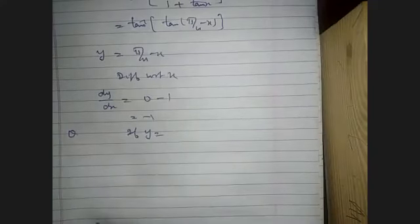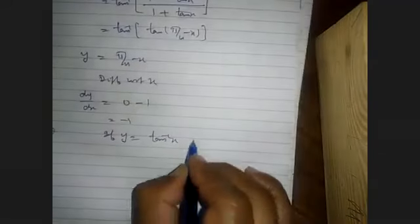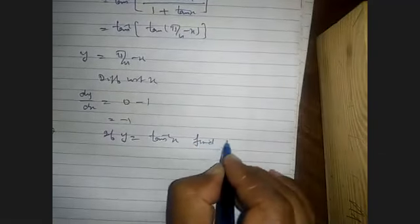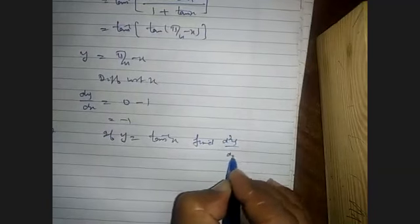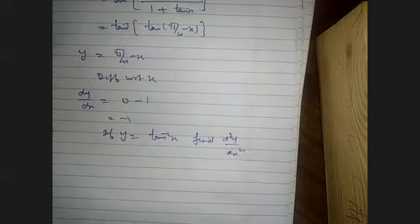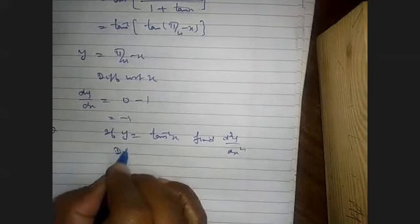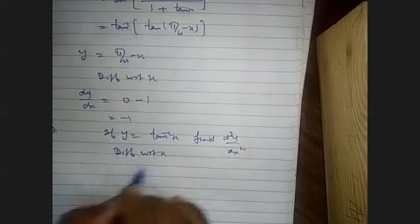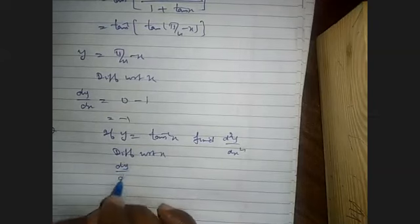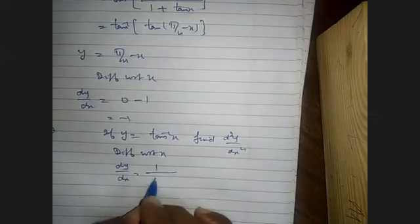Next question: if y equals tan⁻¹(x), find d²y/dx². First differentiate with respect to x: dy/dx equals 1/(1 + x²).